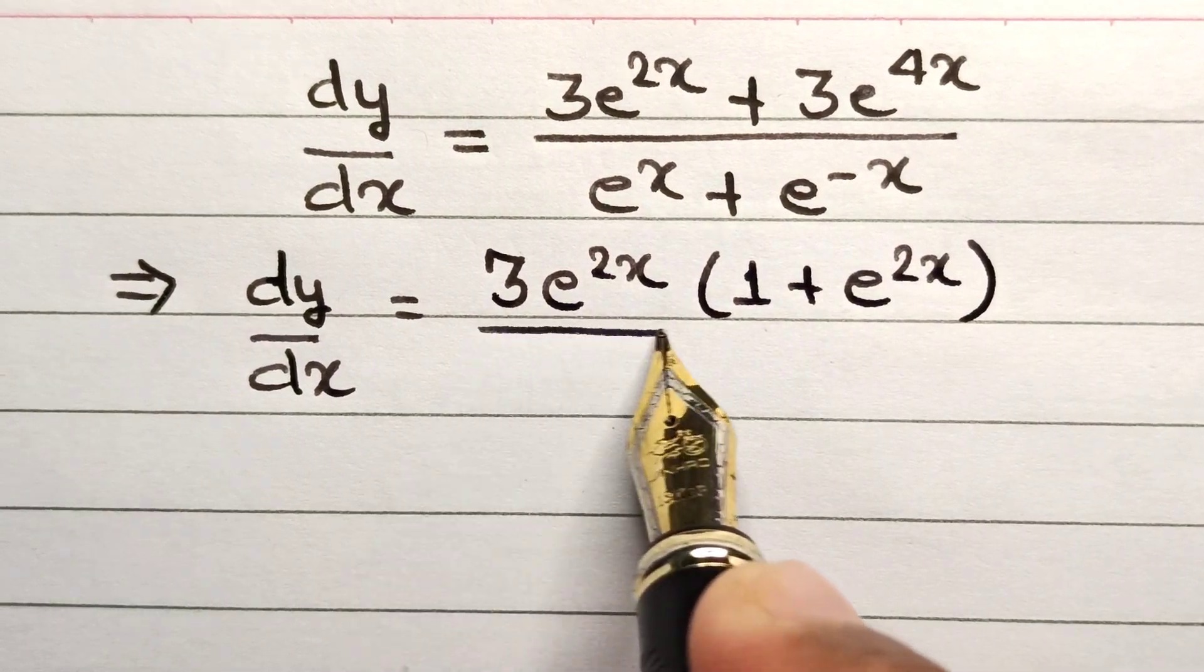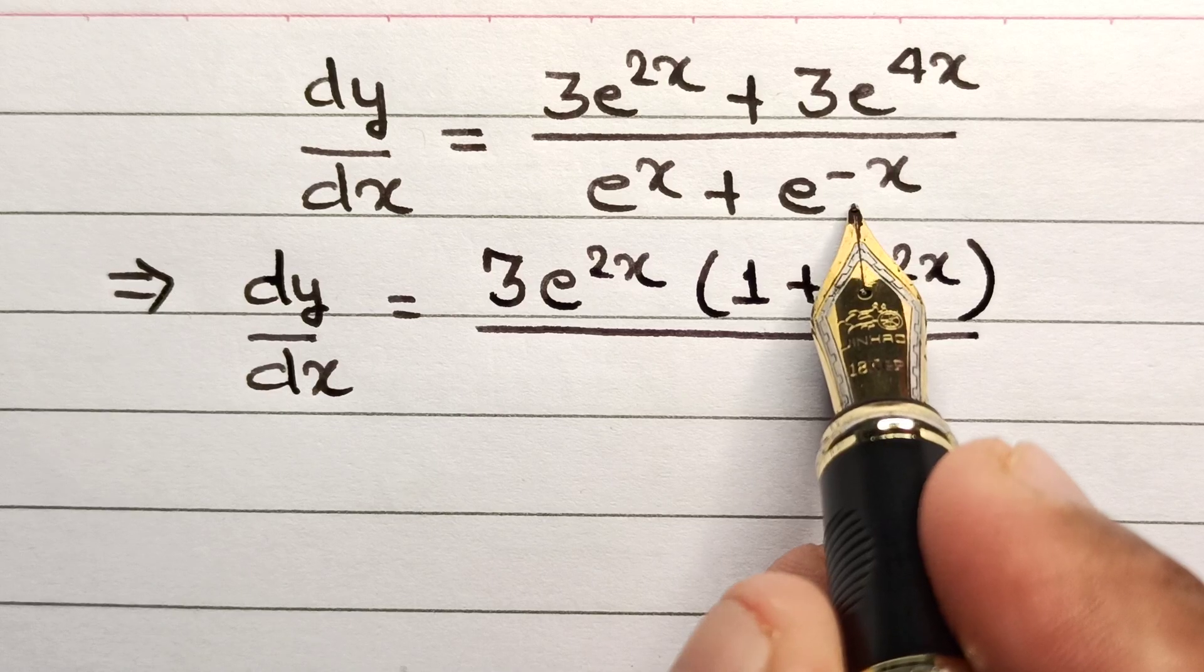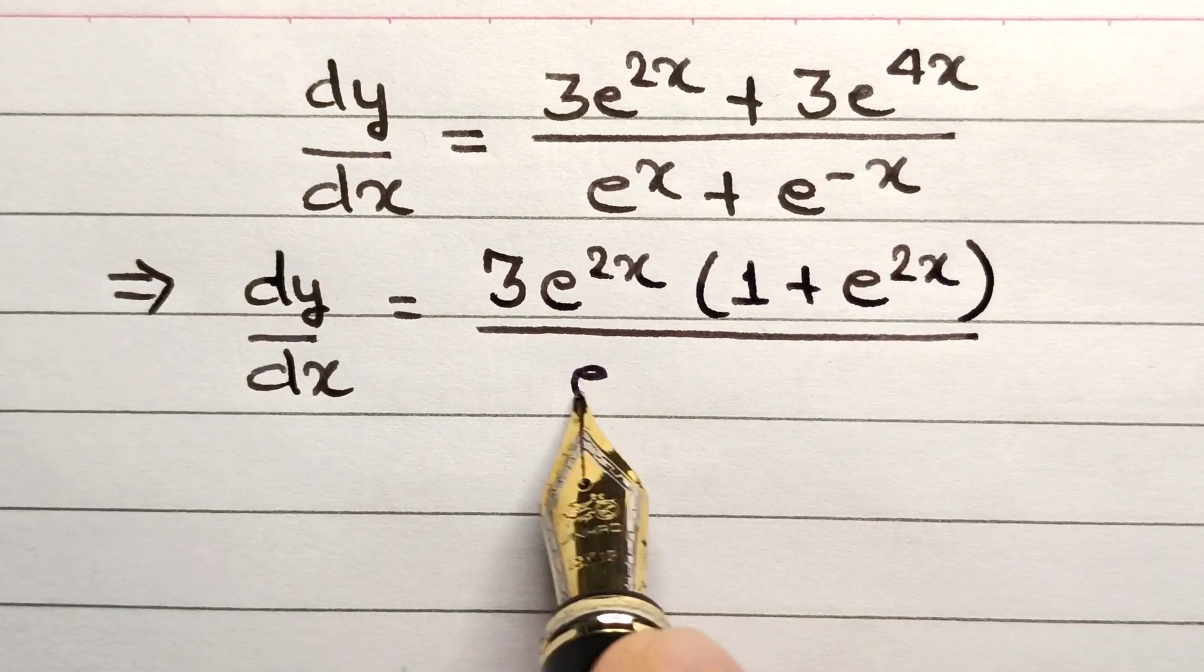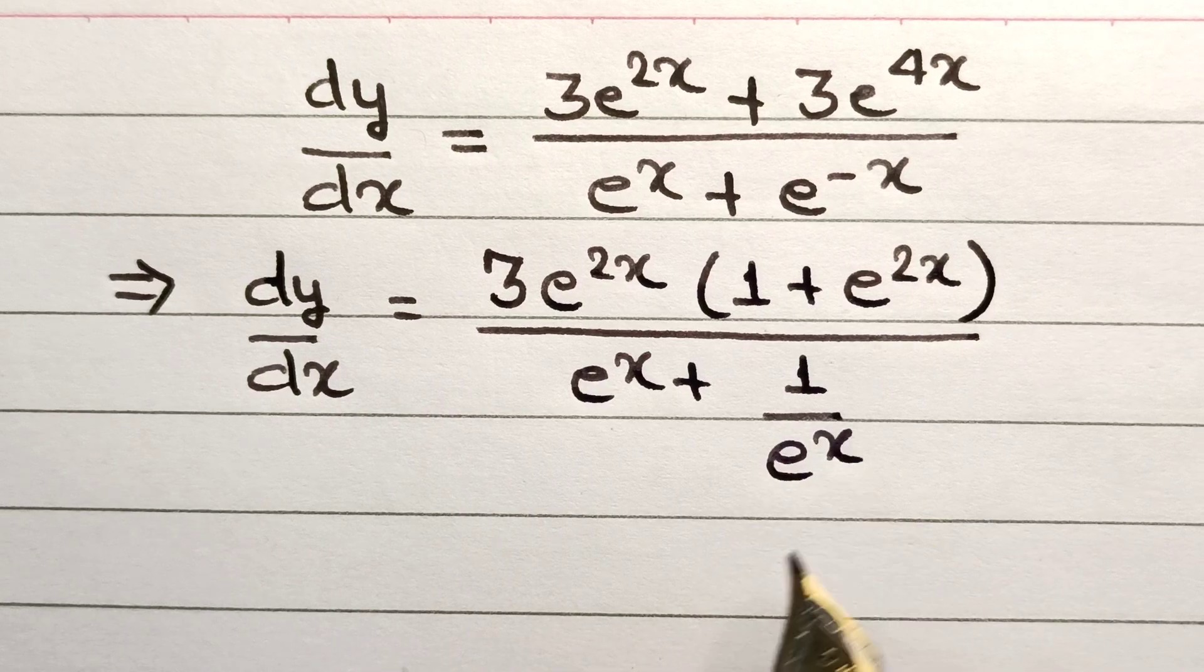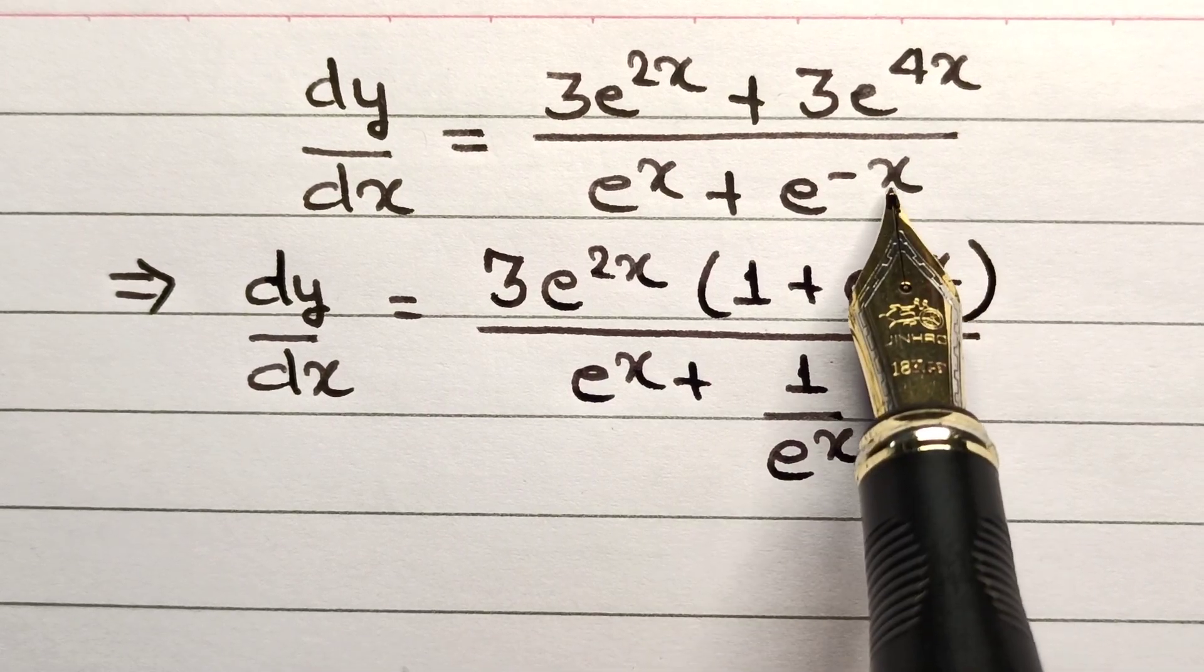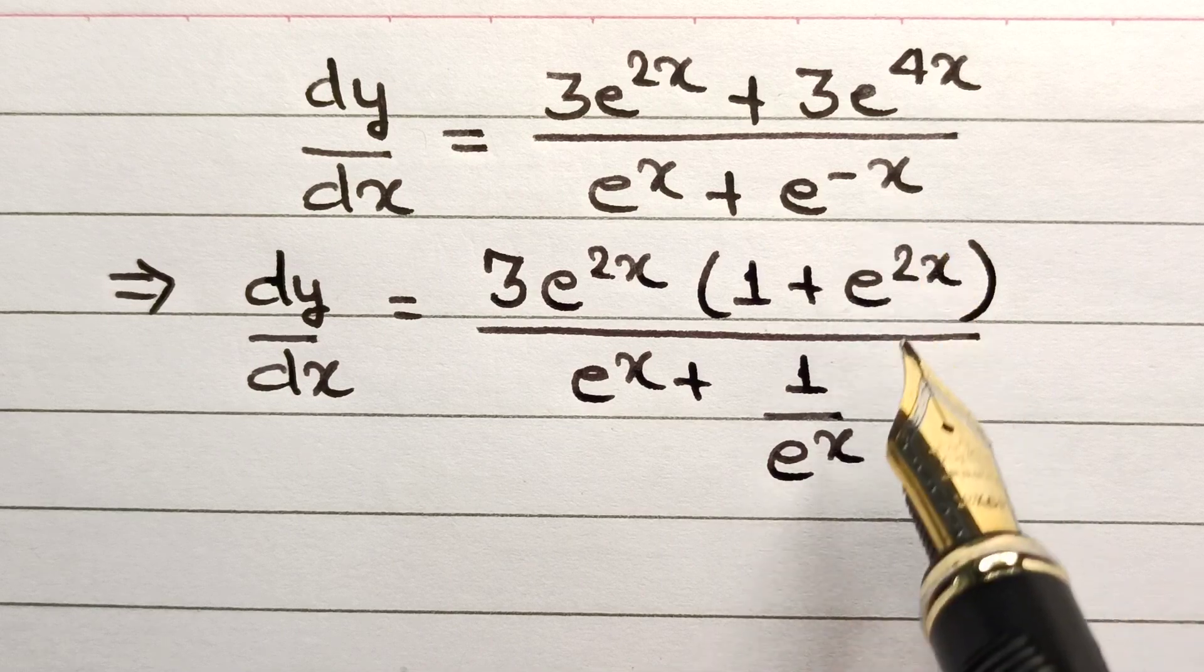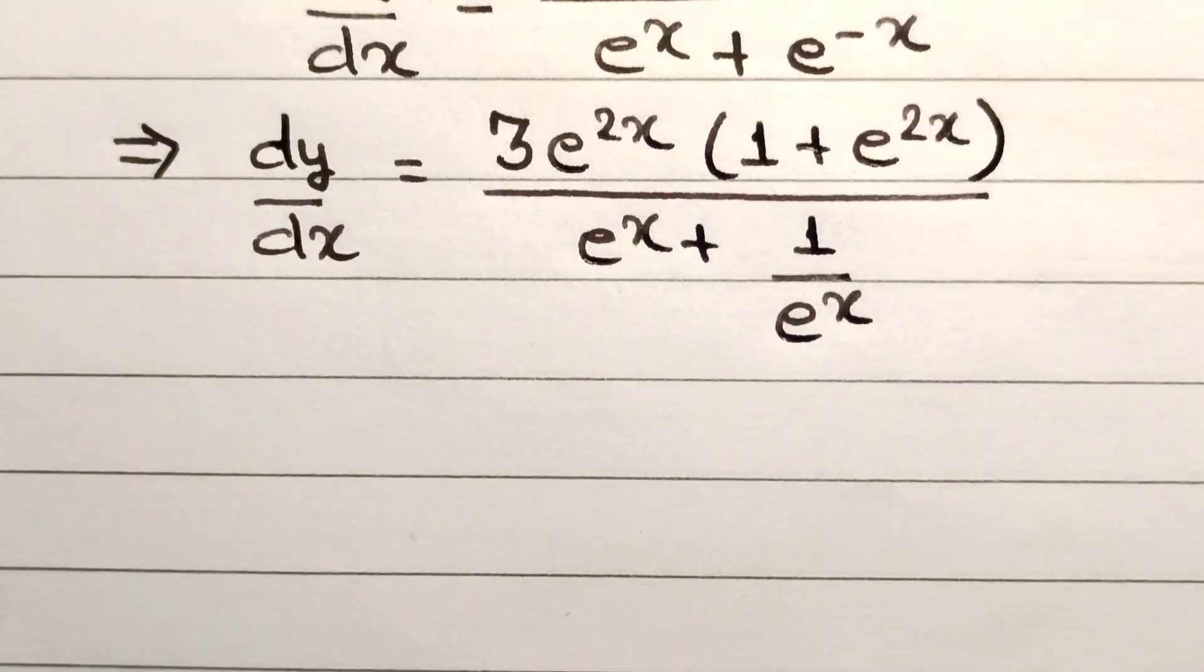This is the first part of the numerator. From the denominator, e^(-x) can be written as e^x plus 1 divided by e^x. As we know, whenever a number is raised to a negative power, it can be written in the reverse form.